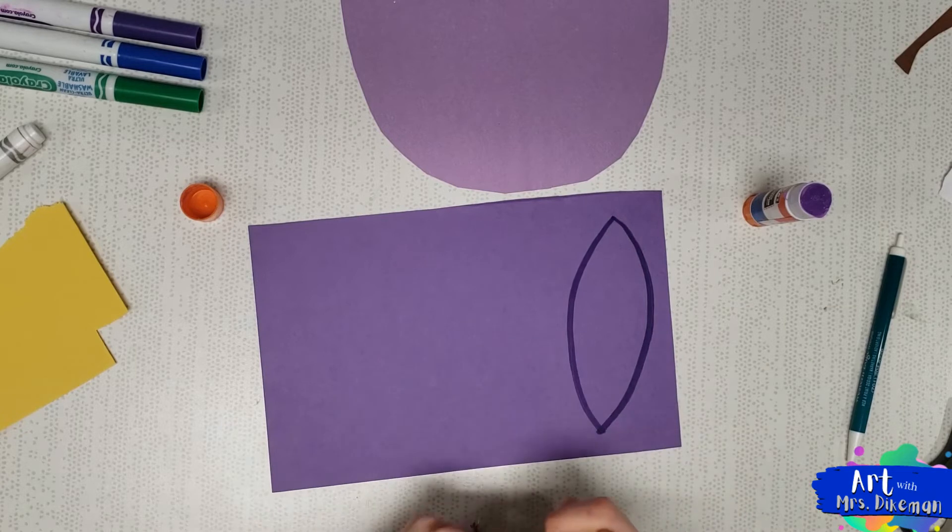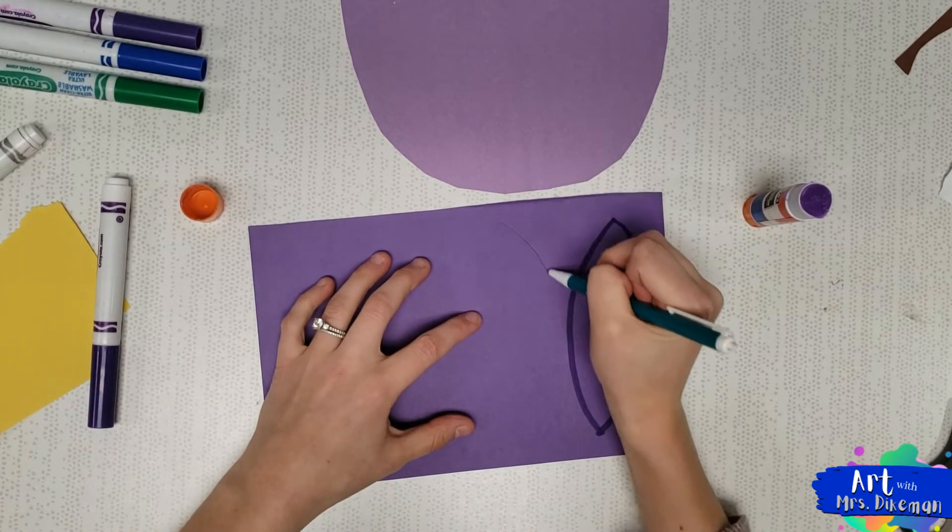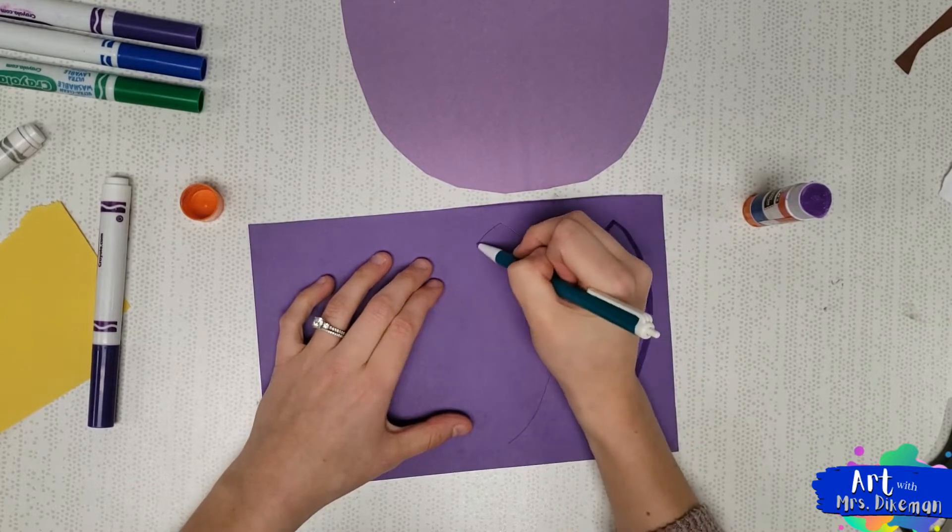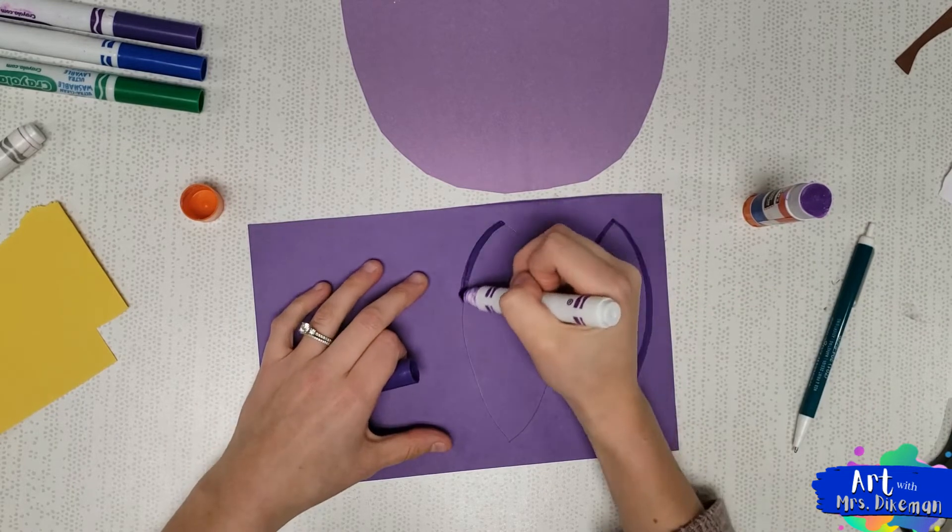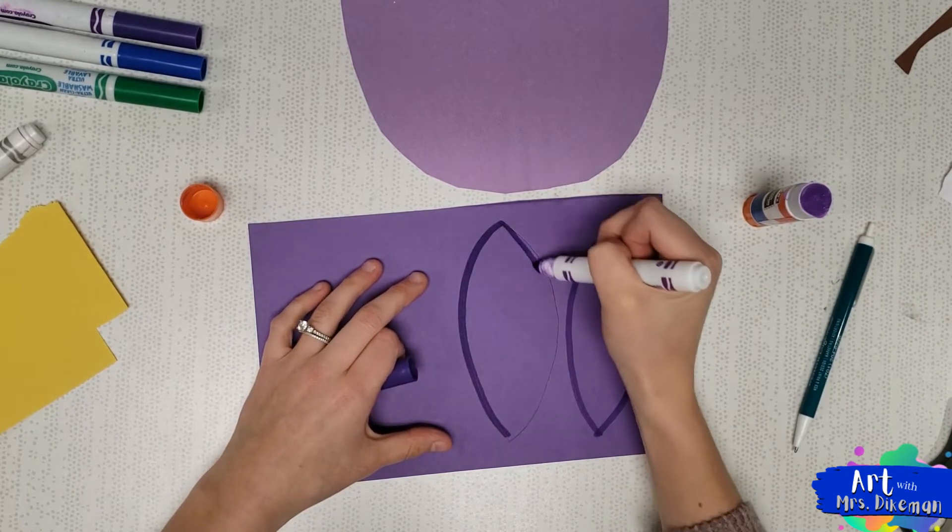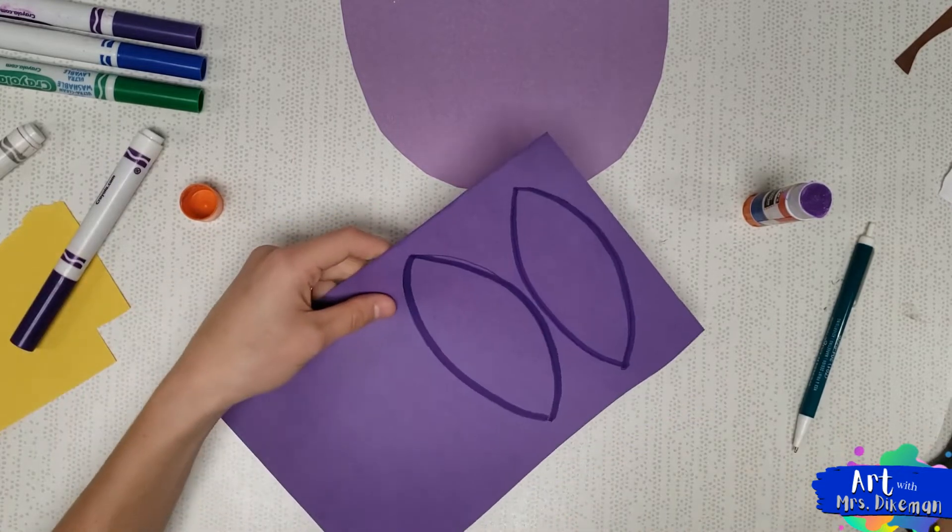If you'd like to trace that for decoration, you certainly can too. We're going to do another one, one curve and another curve going the opposite way, just like that. I'm going to outline it so you can see it once again. And then you may cut them out.